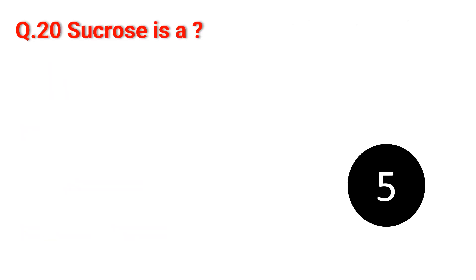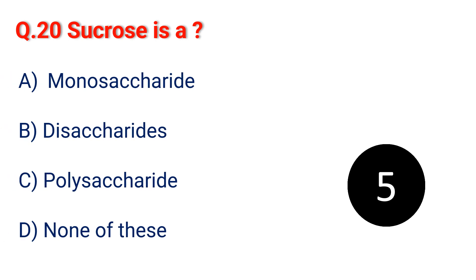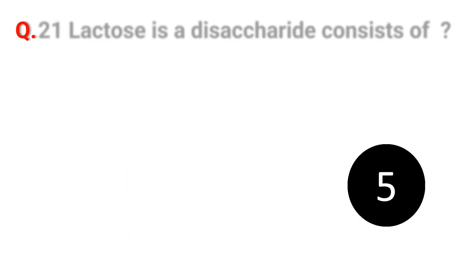Question 20. Sucrose is: A. Monosaccharide. B. Disaccharide. C. Polysaccharide. D. None of these. The answer is B. Disaccharide.